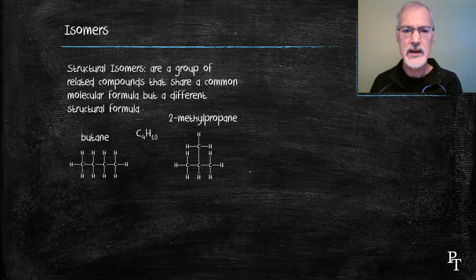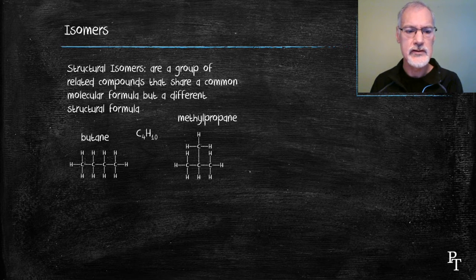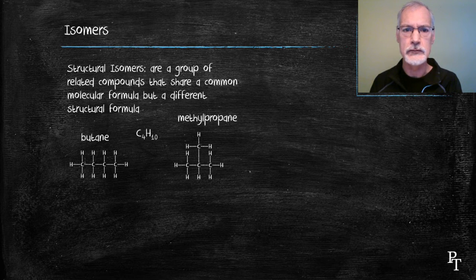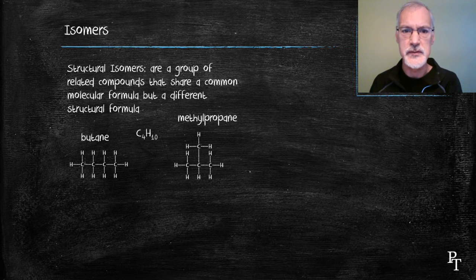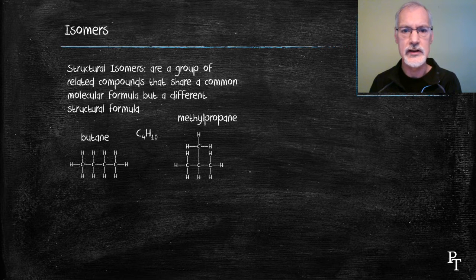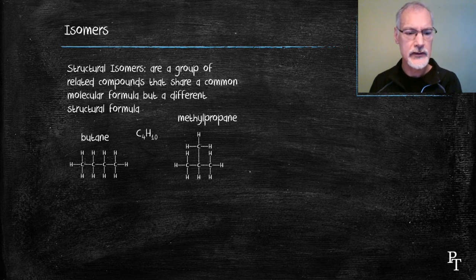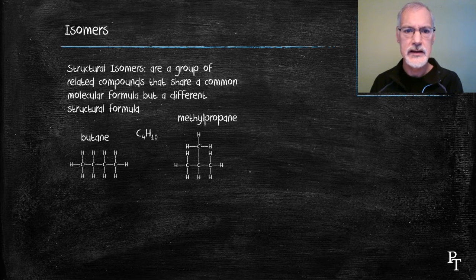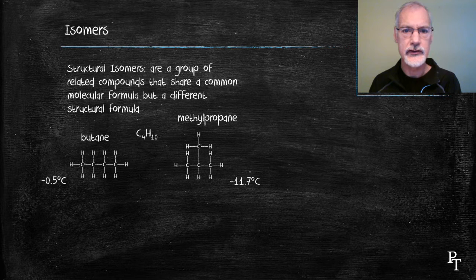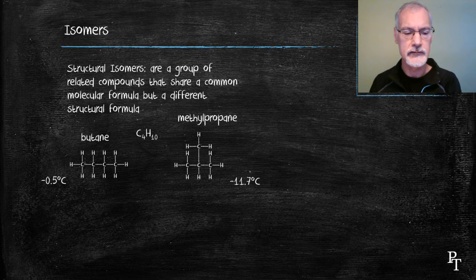In some cases, the 2 is left off because there's no other location it could be. If I put the methyl group on 1 or 3, it would just be butane again. So if it's considered redundant, sometimes you can leave the number off. Anyway, so here are the two different structures. They have slightly different physical properties, with the butane having slightly stronger intermolecular forces.